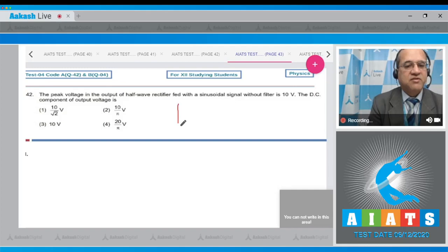The half wave rectifier gets only one half then it is blank and then you get again the half. The DC component, the average value in this case, is equal to the peak value divided by pi. Because this half is absent. Therefore the DC component is equal to V0, which is 10 divided by pi volts, and the correct option is the second one.